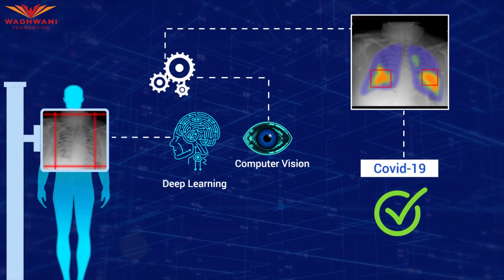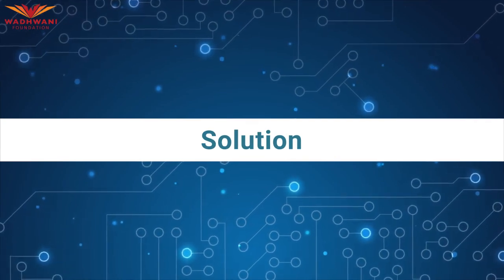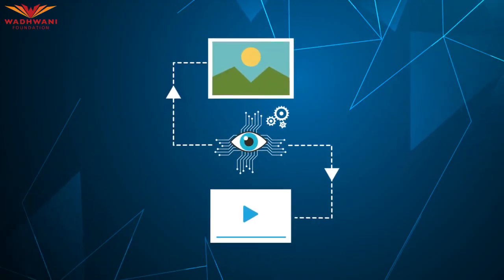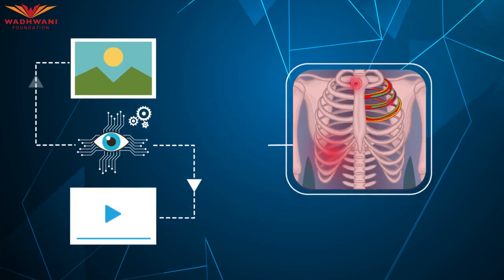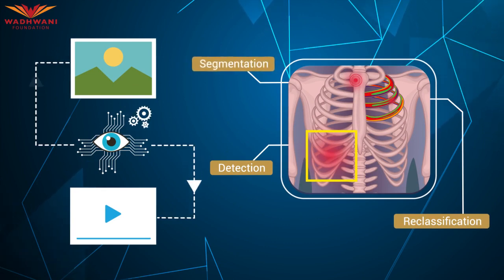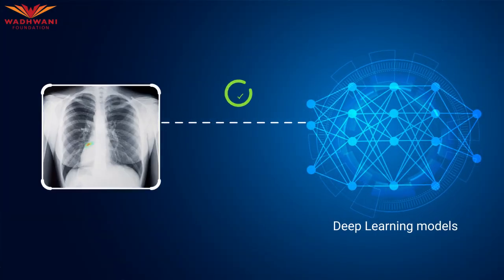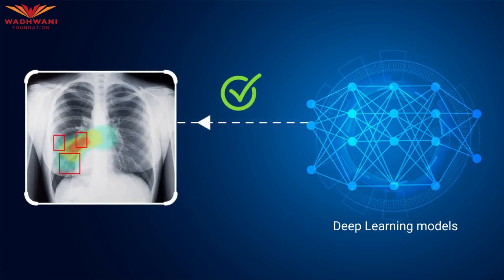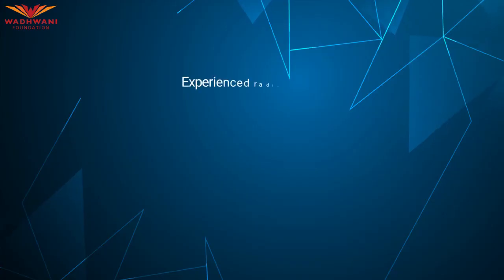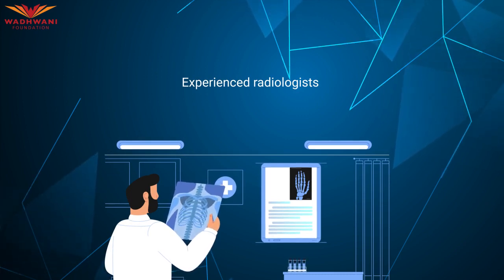By focusing on image and video understanding, computer vision will perform tasks such as object detection, image classification, and segmentation. The application of deep learning will be able to achieve human-like performance in object classification. This method, trained on a massive dataset, can be further fine-tuned on a sample related to the task of interest — such as X-ray images. Experienced radiologists can annotate the images based on their understanding, which will serve as the training dataset for the deep learning models.